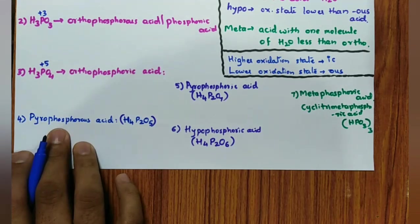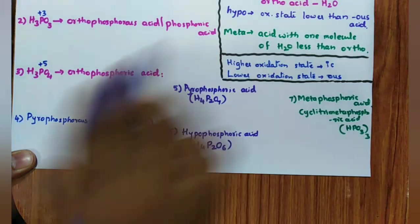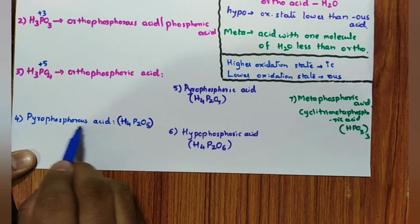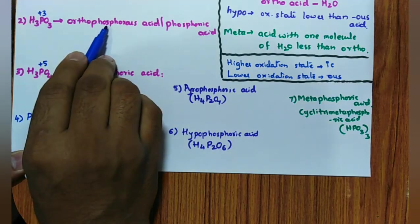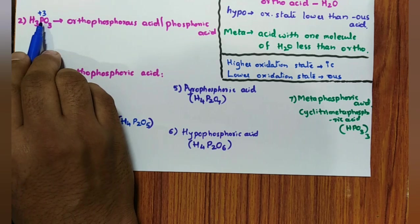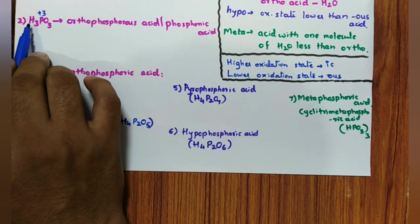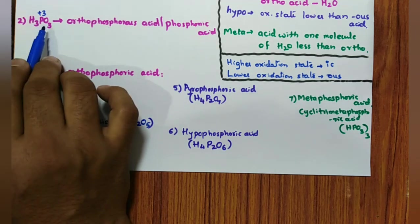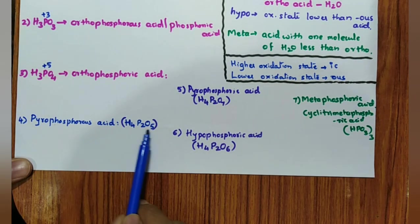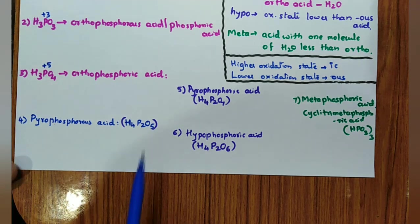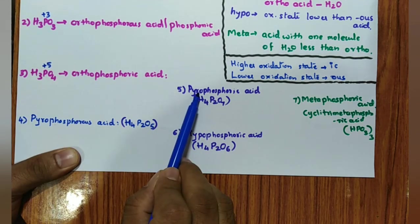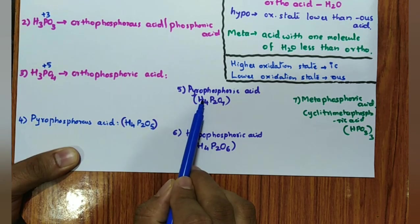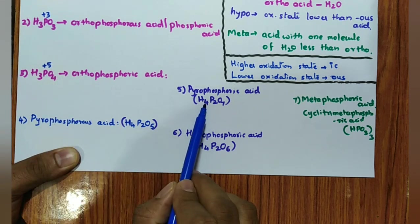Pyrophosphorous acid: pyro means heating of orthophosphorous acid. Take two molecules of orthophosphorous acid — that is H₆P₂O₆ before heating. When you heat, remove one water molecule; remaining is H₄P₂O₅. Then pyrophosphoric acid: two molecules of orthophosphoric acid minus H₂O gives H₄P₂O₇. Remember, when you do pyro, oxidation state does not change. So pyrophosphorous acid is also +3, and pyrophosphoric acid has phosphorus in +5 oxidation state.